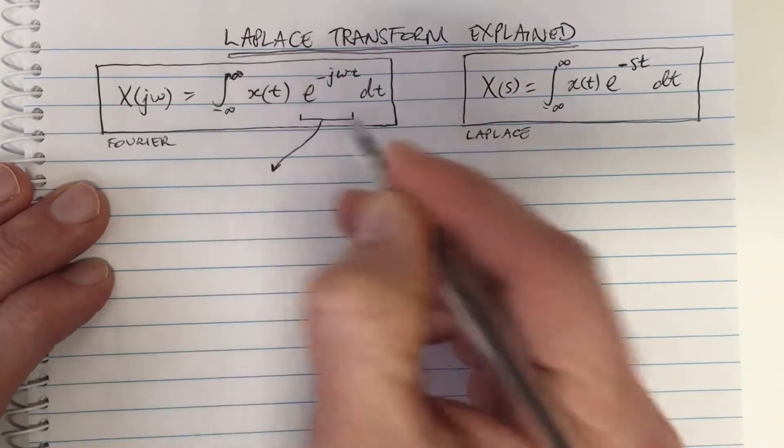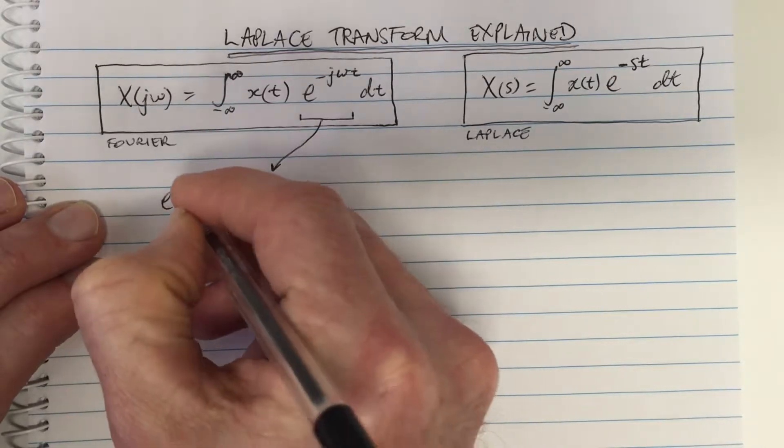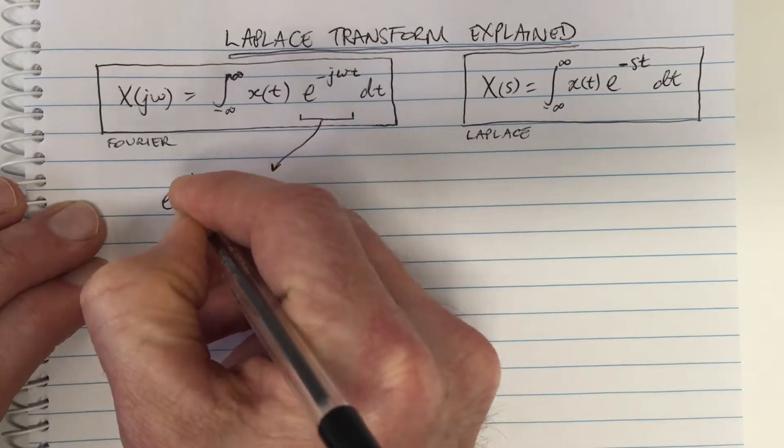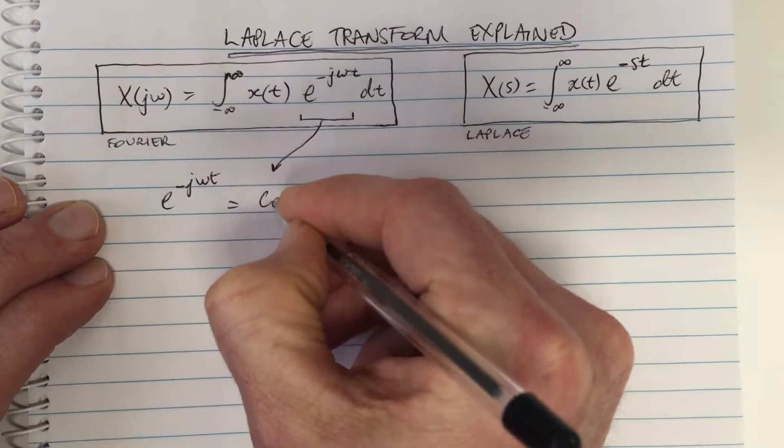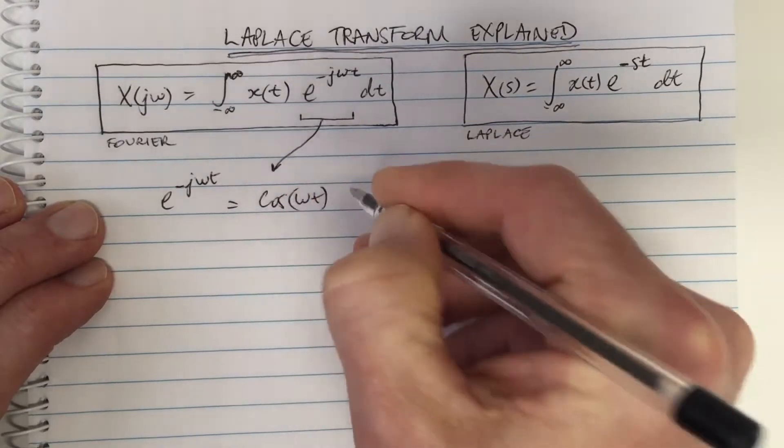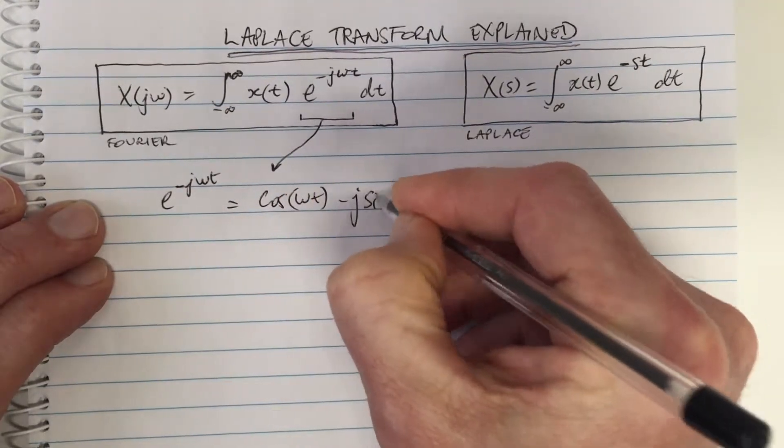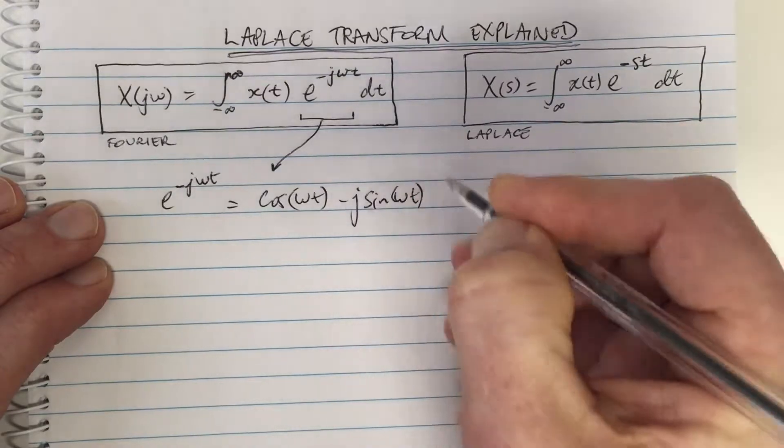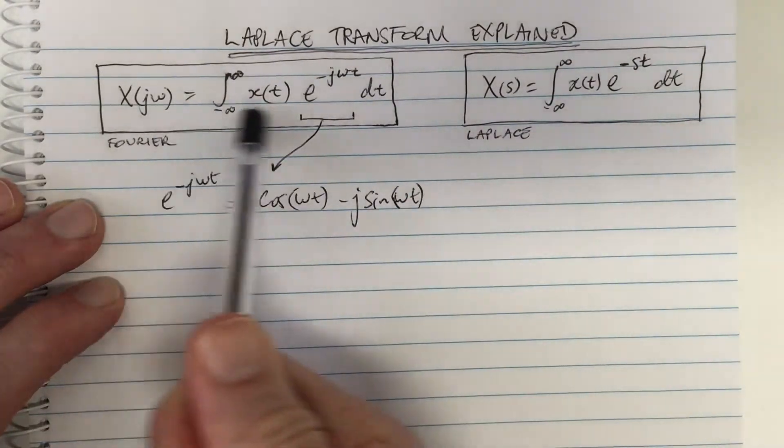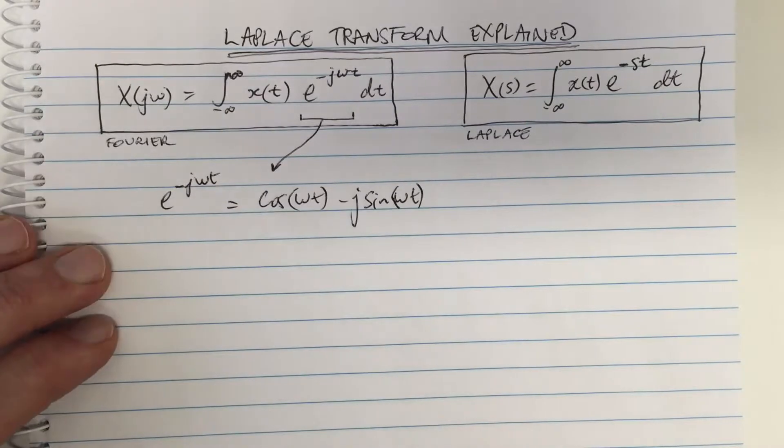Let's remind ourselves what this is: e^(-jωt) equals cos(ωt) minus j sin(ωt). I always encourage people to look at the mathematics but think about waveforms.